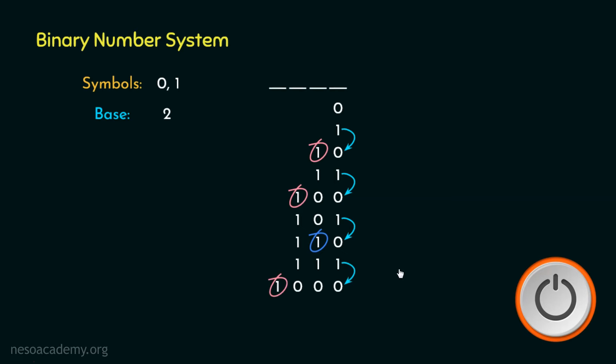So to summarize, whenever the bit in the LSB gets changed from one to zero, we have to observe the next bits toward the MSB. If that is a zero, it will just get changed to one. Else, if it is a one, it will change to zero and again we will have to consider the next bit towards the MSB.